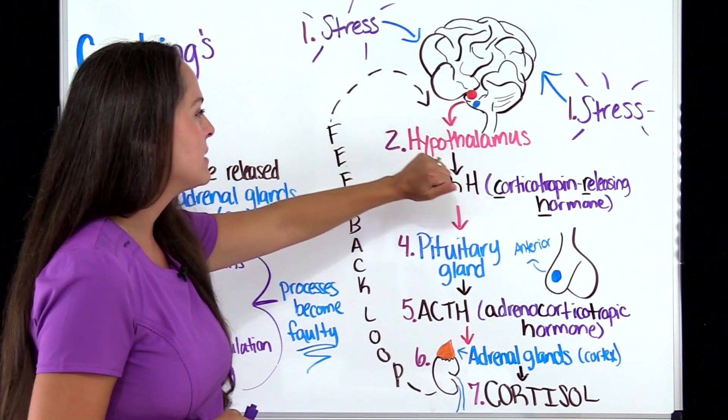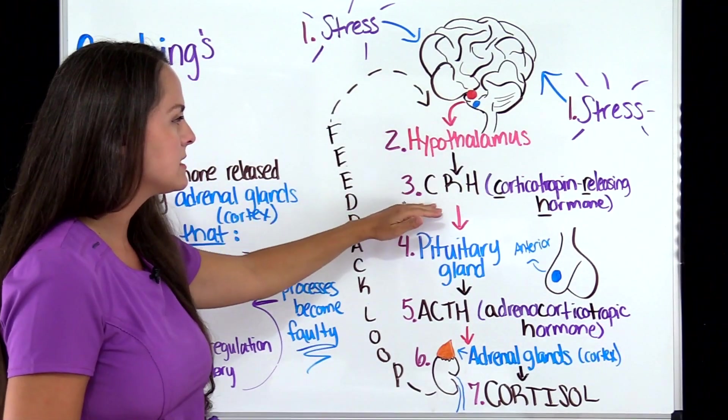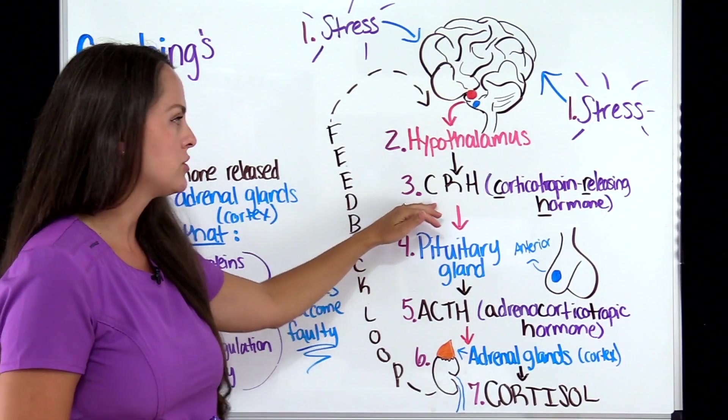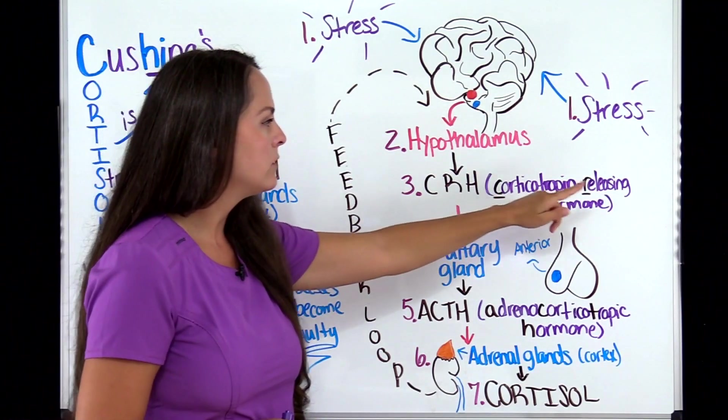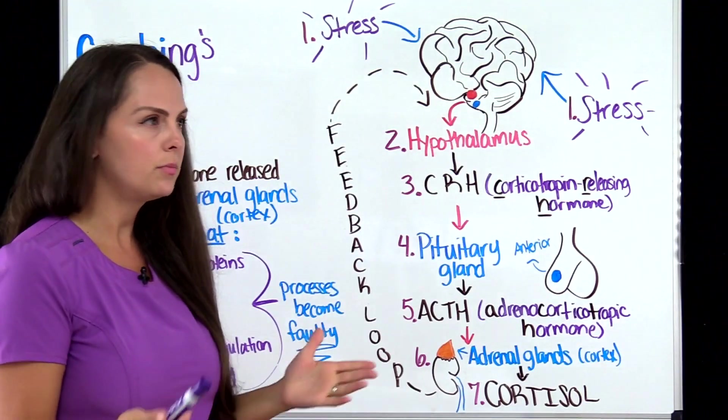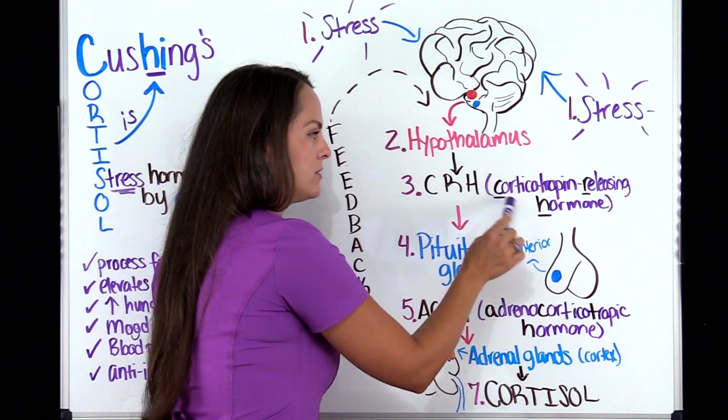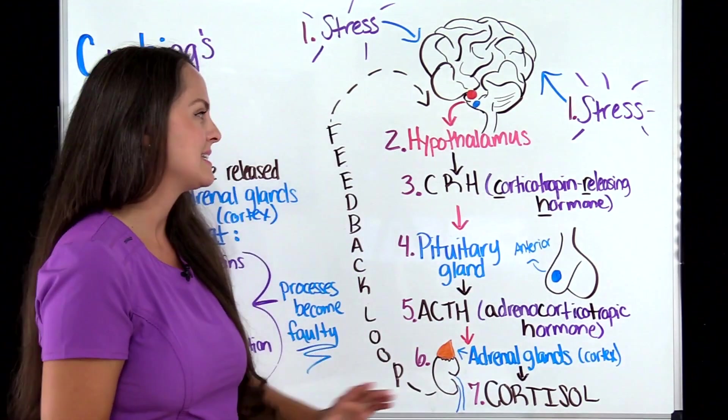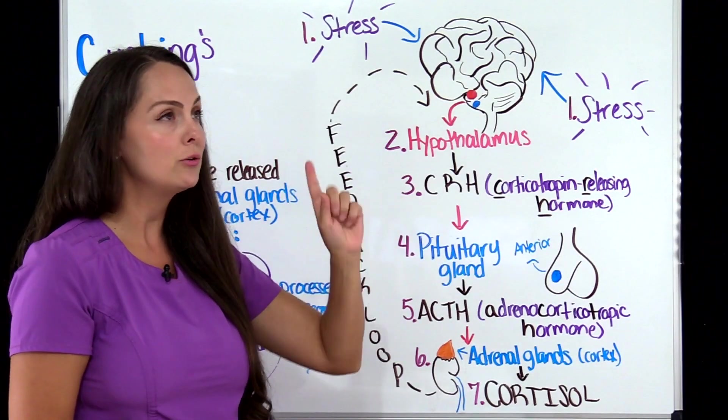Inside the brain, we have the hypothalamus. It responds and it's going to release a substance known as CRH. This is corticotropine releasing hormone. And look at this little prefix in that word right there. It looks a little like cortisol, doesn't it? So this is one of those precursors to cortisol.